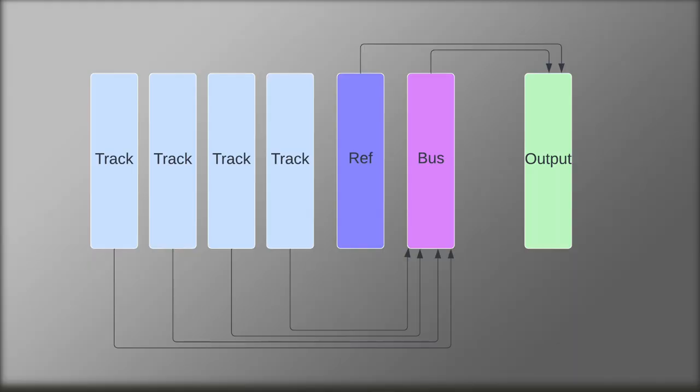The benefit of that is that you can adjust the level on the bus before it hits the output, put metering on the output after your mix bus processing so you can see that you have the right levels at all times. But foremost, if you use reference tracks, you can route those directly to the output without going through the mix bus, because you don't want mix bus processing on your reference tracks.